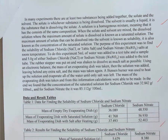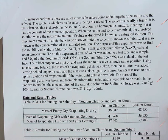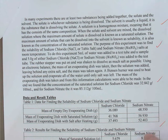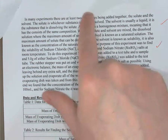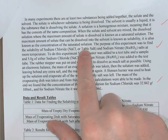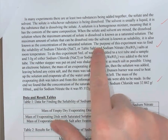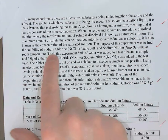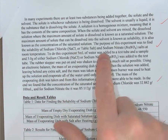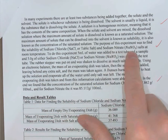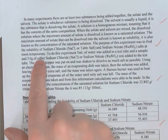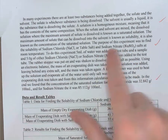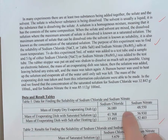The second thing we should find in a good abstract is the purpose of the experiment — why are we doing this? Reading through the background information, we see the phrase: 'The purpose of this experiment was to find the solubility of sodium chloride and sodium nitrate salts at room temperature.' That is a very clear statement of purpose.